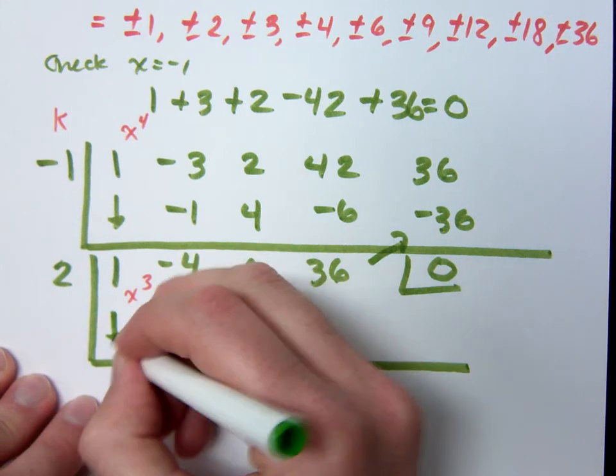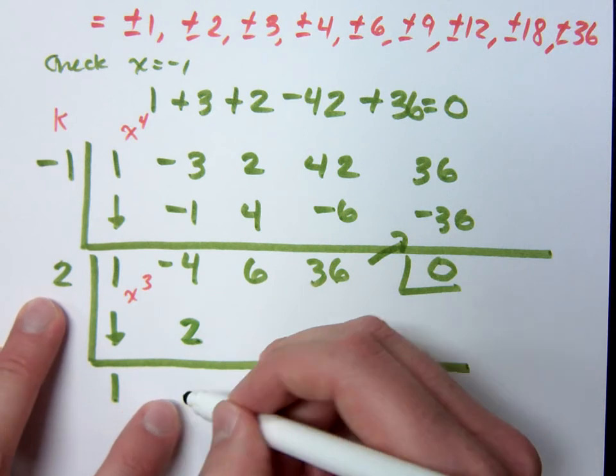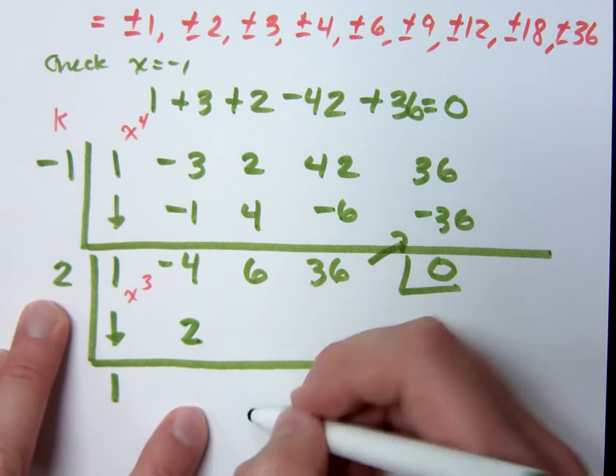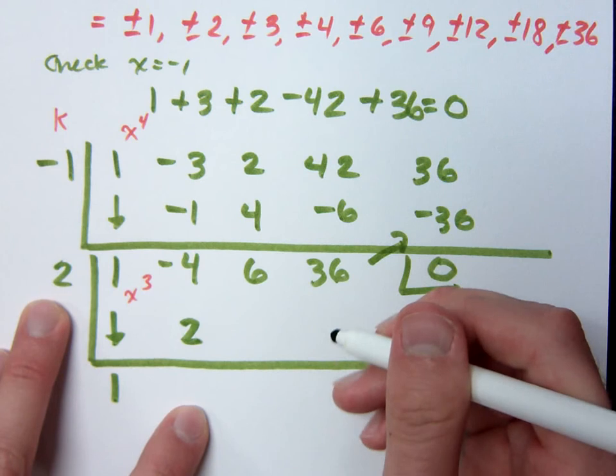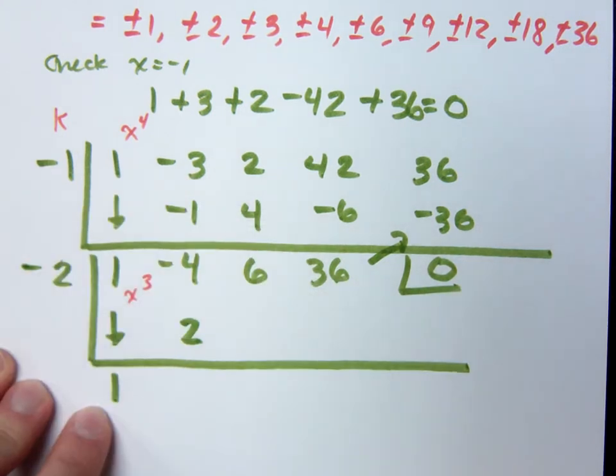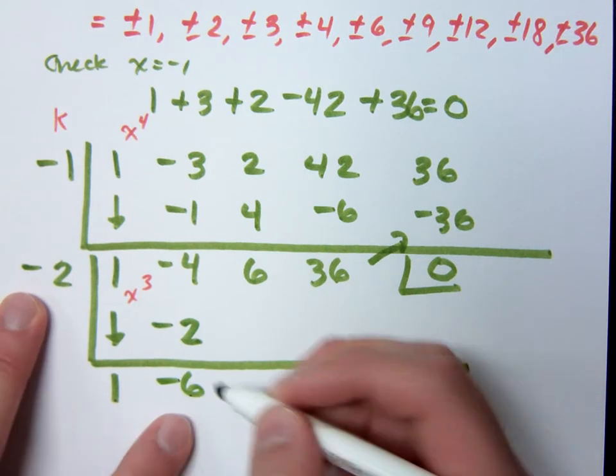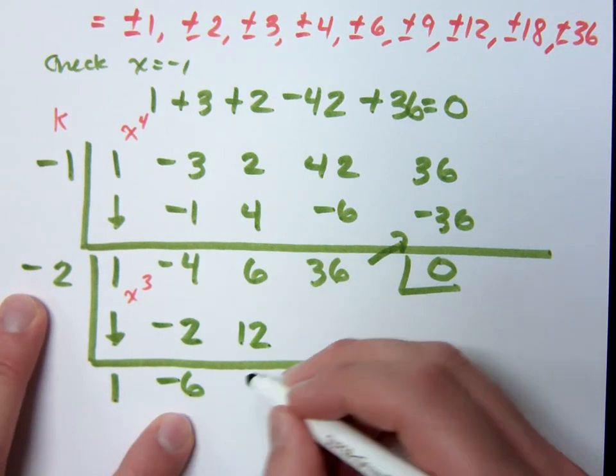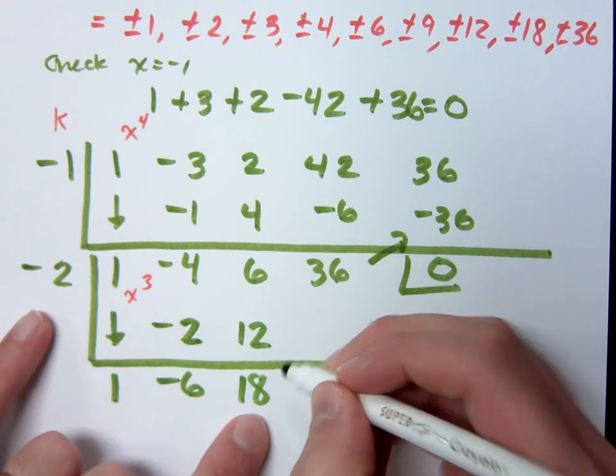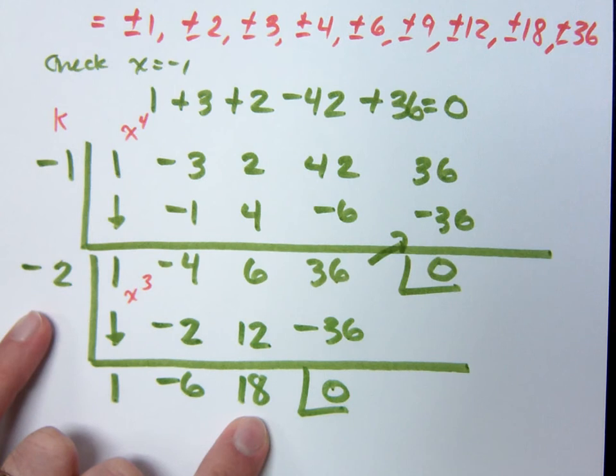If I do 2, I get 1. This guy becomes a 2. Negative 2 becomes negative 4. It's not going to cancel out to 36. It's not going to be big enough. What if I do negative 2? I get negative 2 here, which gives me negative 6. It gives me 12. It gives me 18. Multiply, I get negative 36. I get a remainder of 0.